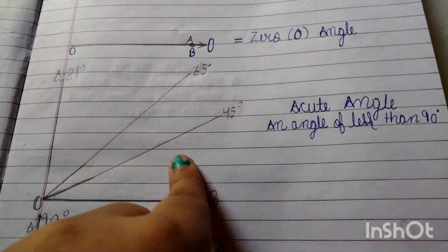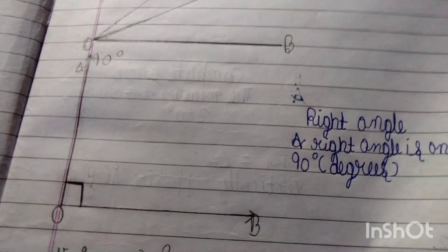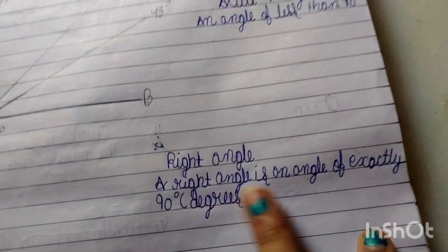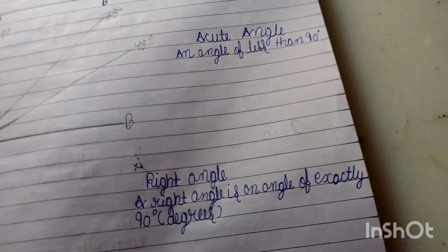45 degrees, less than 90 degrees. Right Angle: A right angle is exactly 90 degrees.